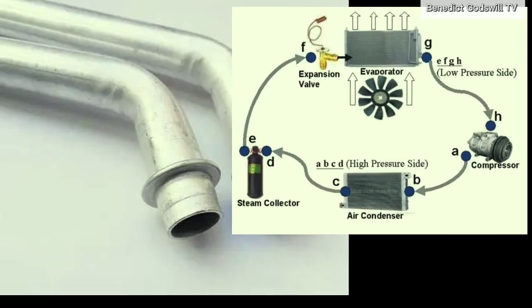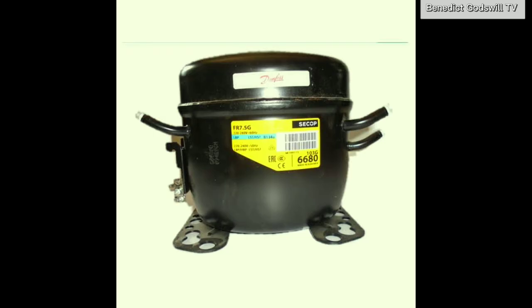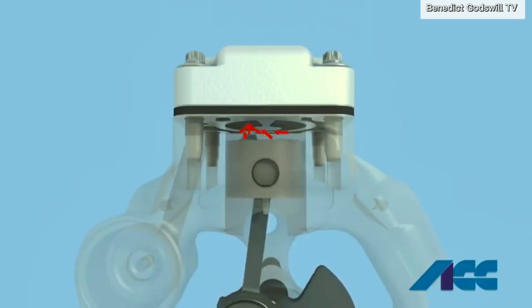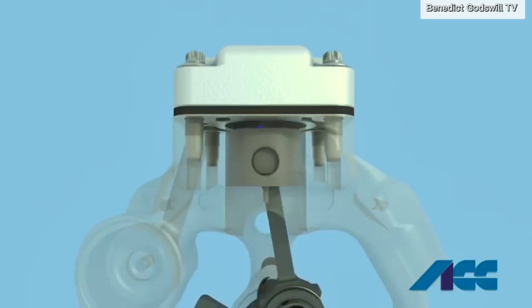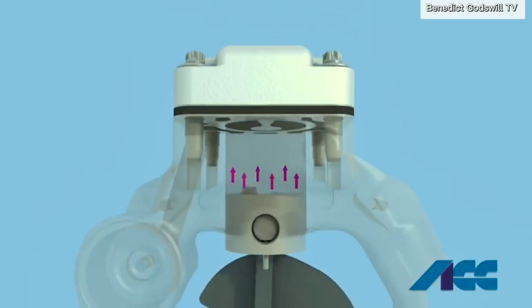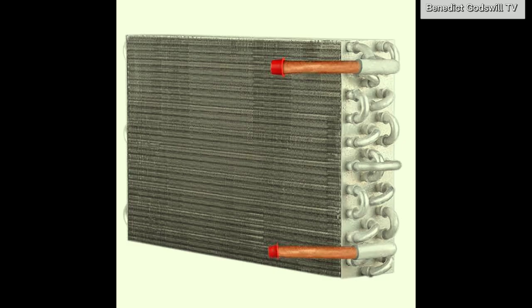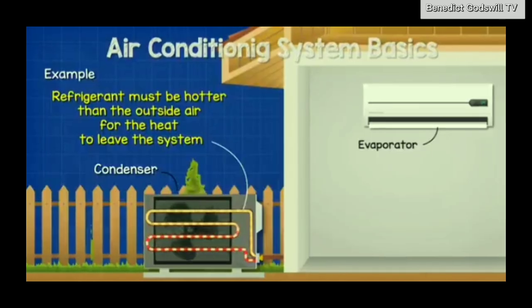Now the refrigerant — a warm vapor — flows through a pipe to the outdoor unit, where it enters the compressor. The compressor does what its name suggests: it compresses the gas, increasing both its pressure and temperature. The hot, high-pressure vapor then moves into the condenser coil, still outside.